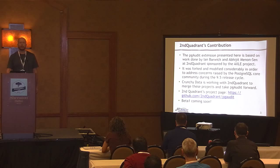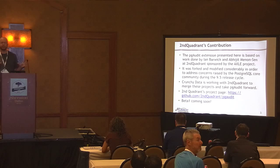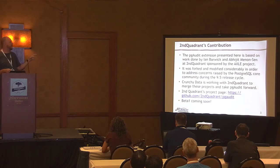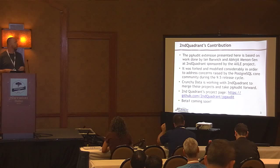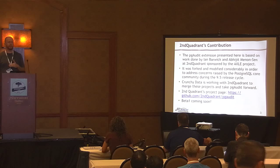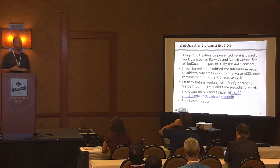The code I'm going to talk about today — pgaudit, the extension that we were trying to get into core this year — was originally written by Ian and Abhijit at Second Quadrant. This project was sponsored by Axel. What I did was I took that project and forked it and made a lot of modifications, regression tests and documentation and general improvements with the help of the community, to try to get that into the 9.5 release cycle, which unfortunately didn't work out.